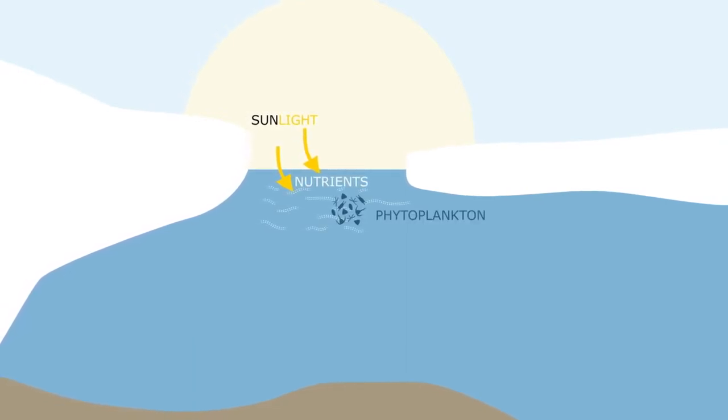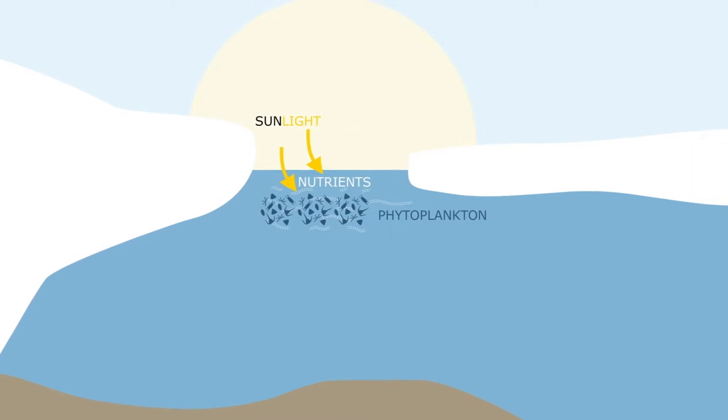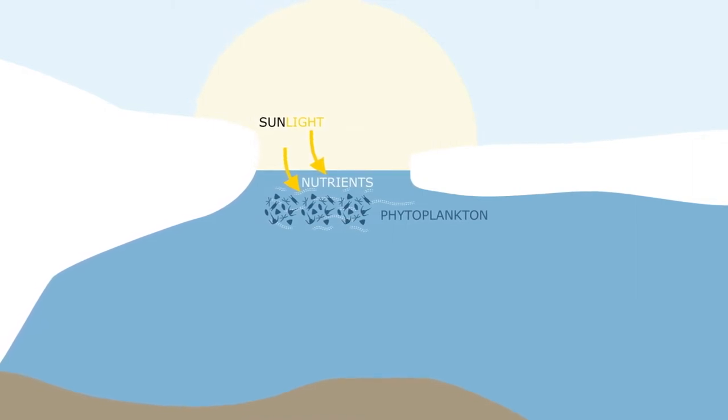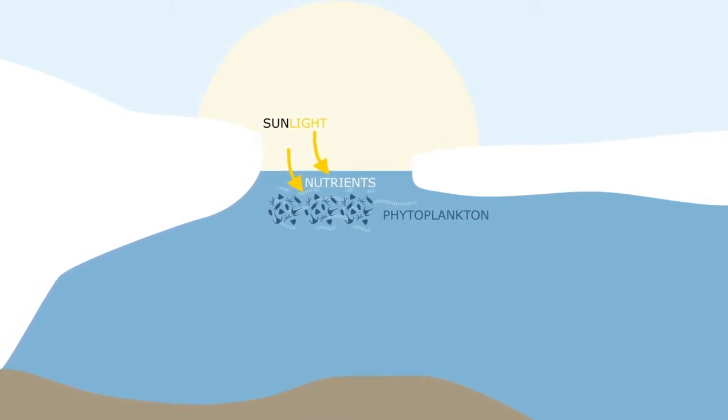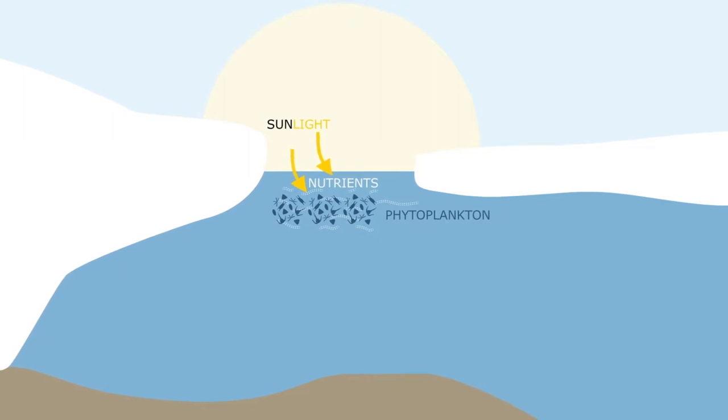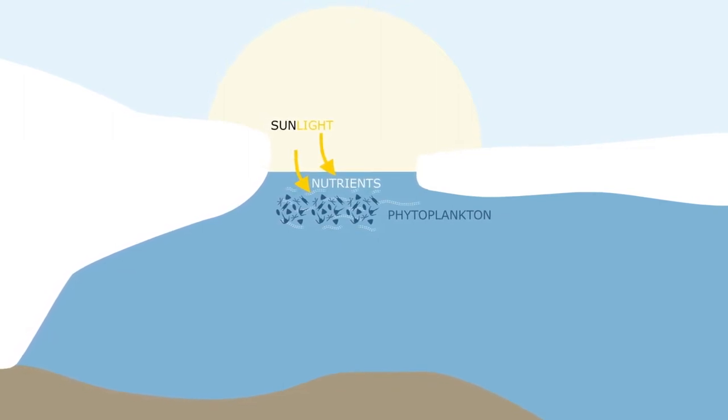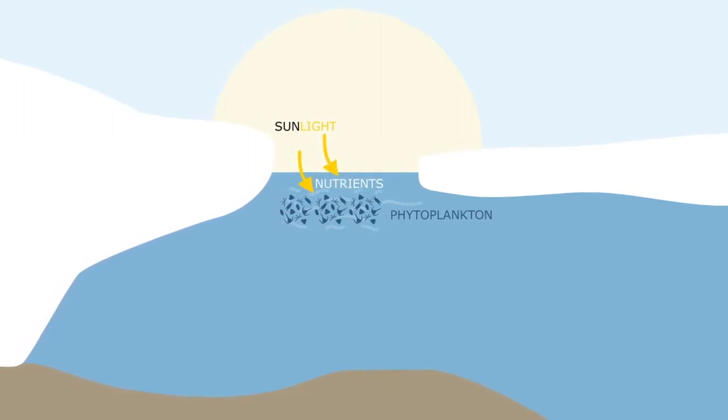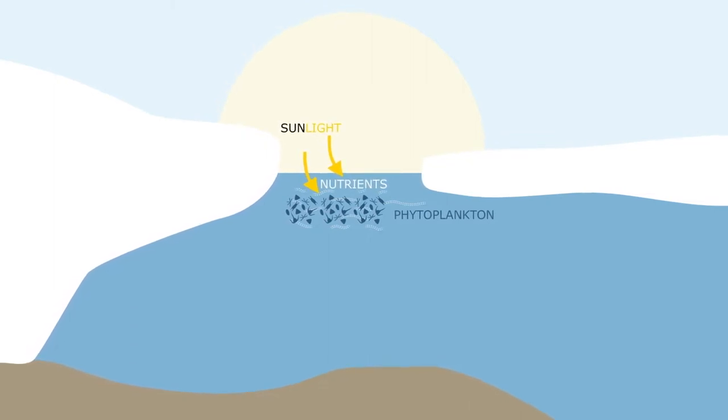Phytoplankton requires sunlight and nutrients to grow. With spring, the sun returns to the Antarctic. The sea ice pack shields the ocean from the sun, so it is the open waters of the polynias that receive the first glimpse of light. It is here where phytoplankton first blooms.